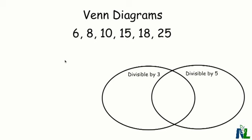Venn diagrams are great tools for sorting numbers based on their divisibility. Here we have six numbers that we are going to sort based on their divisibility by three and their divisibility by five.